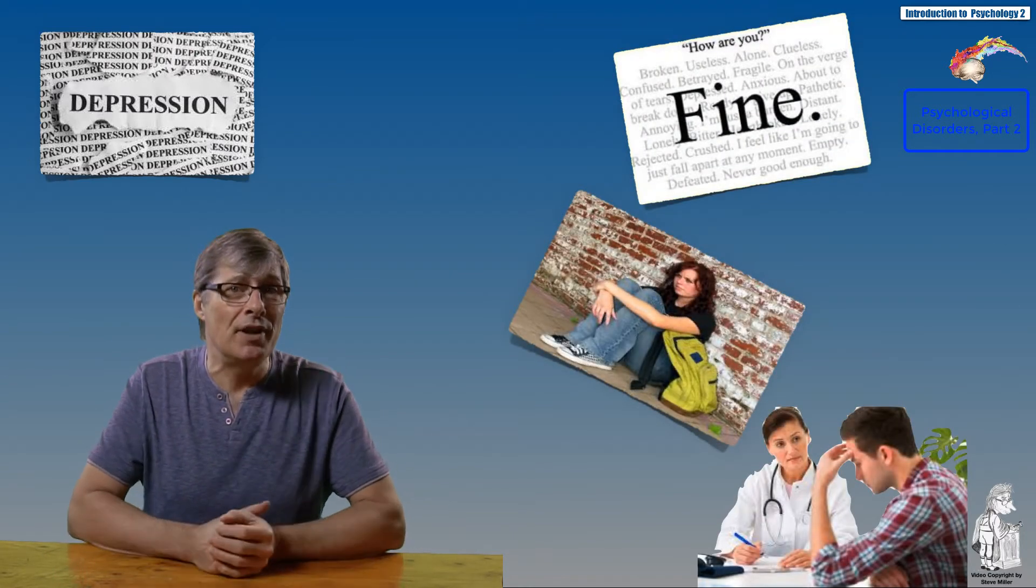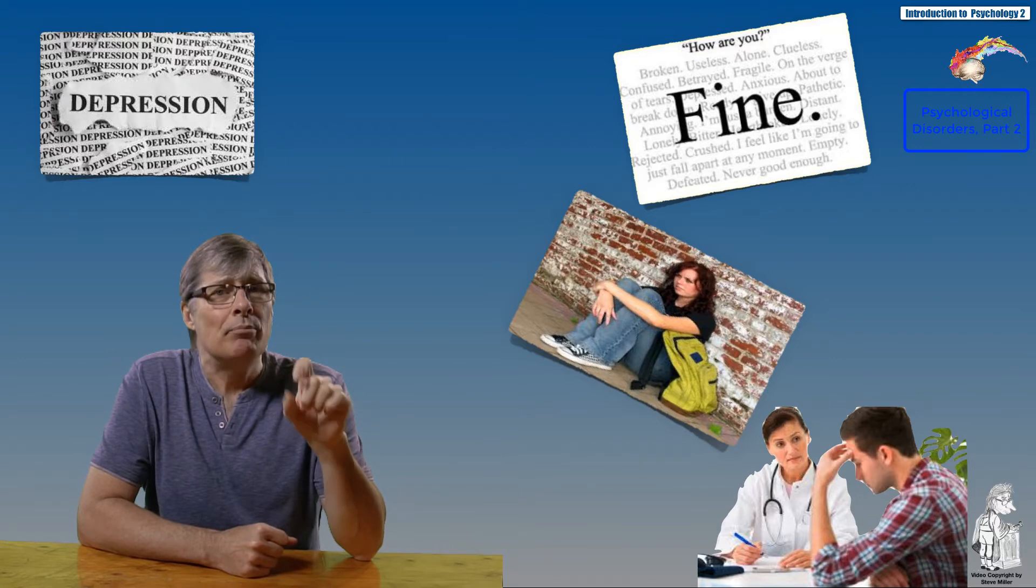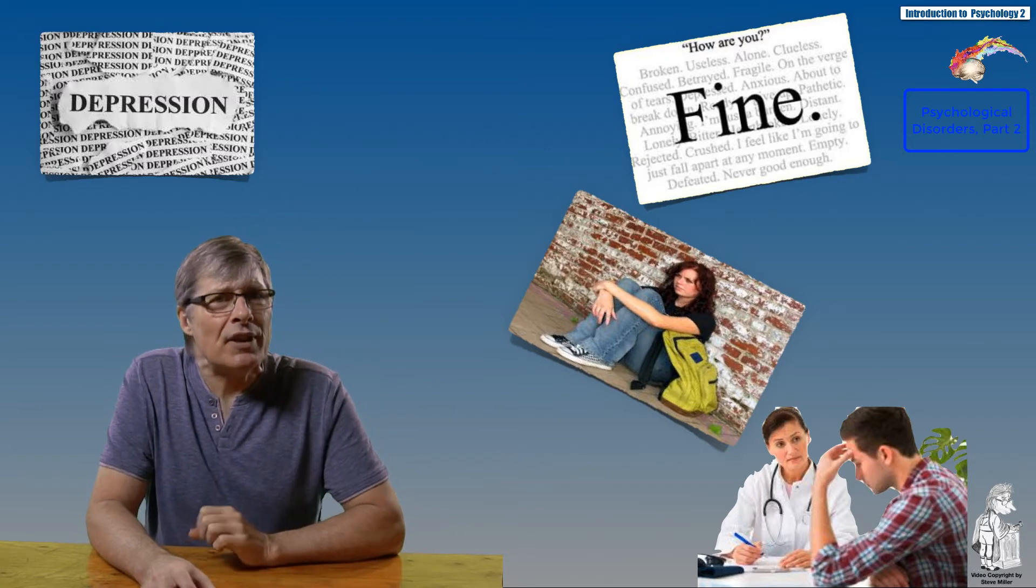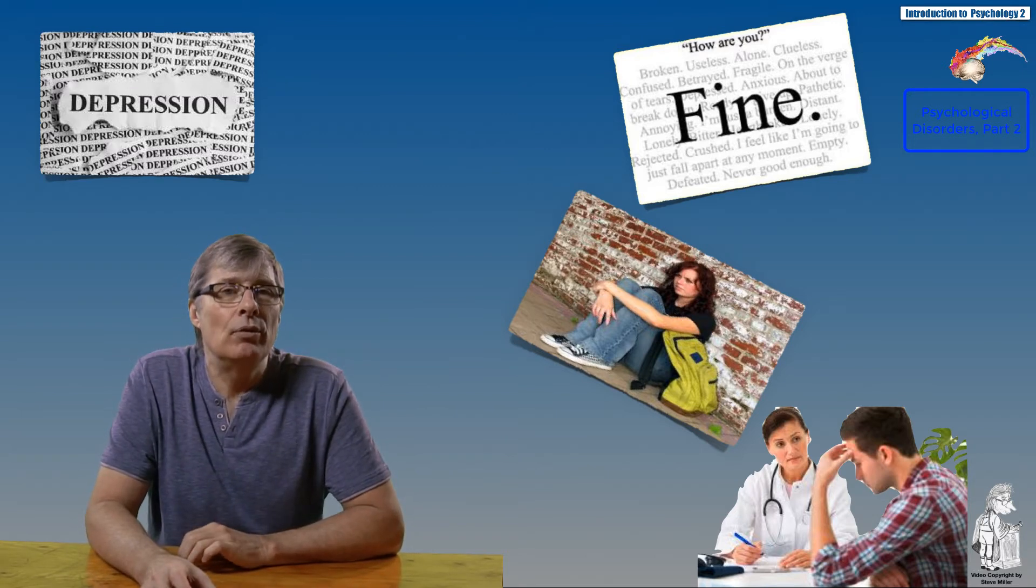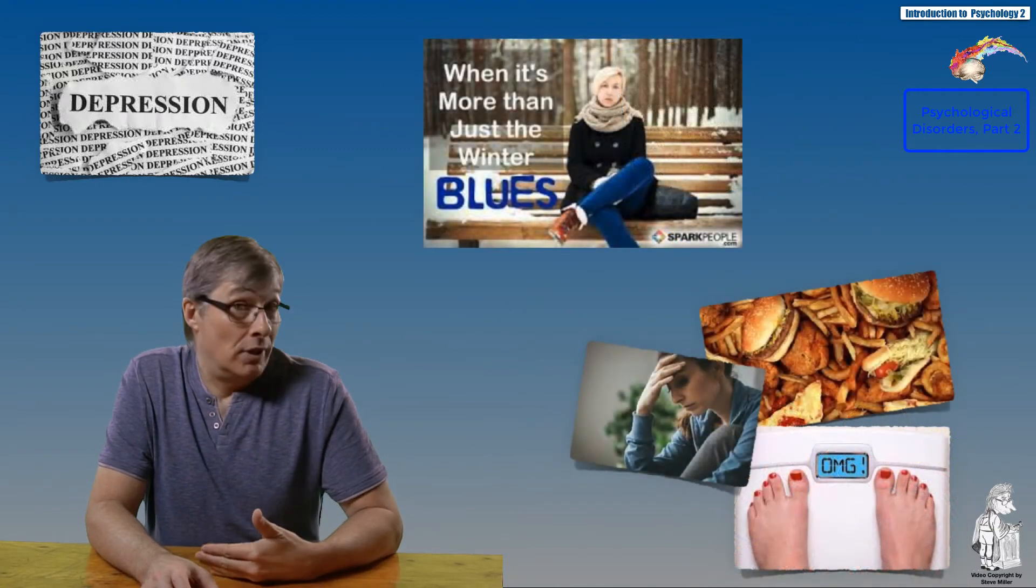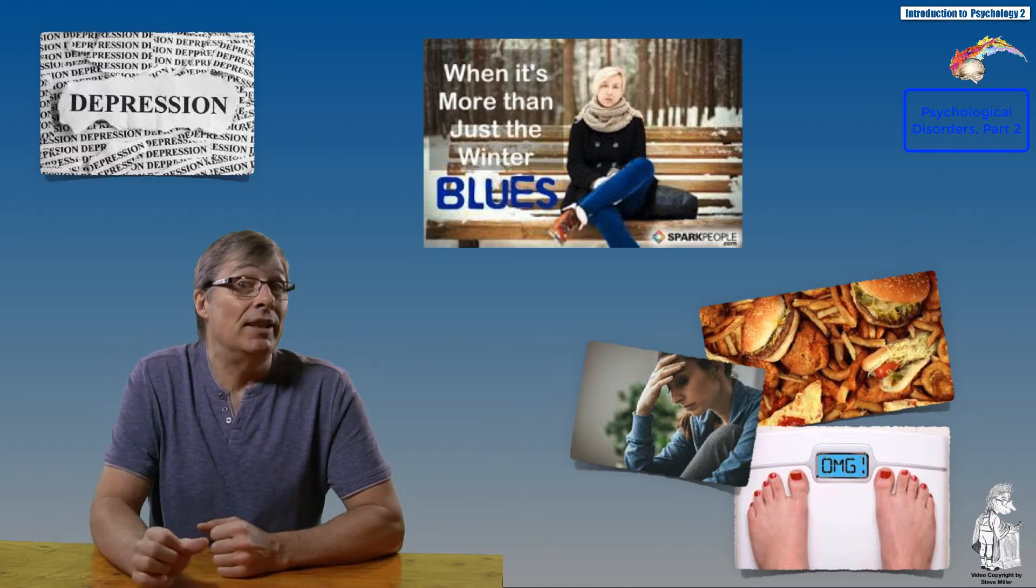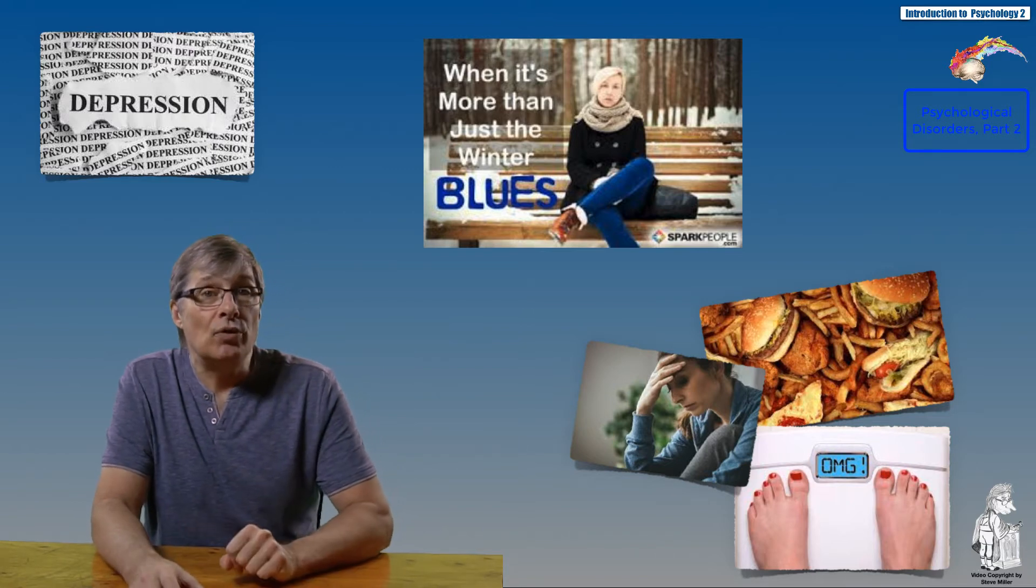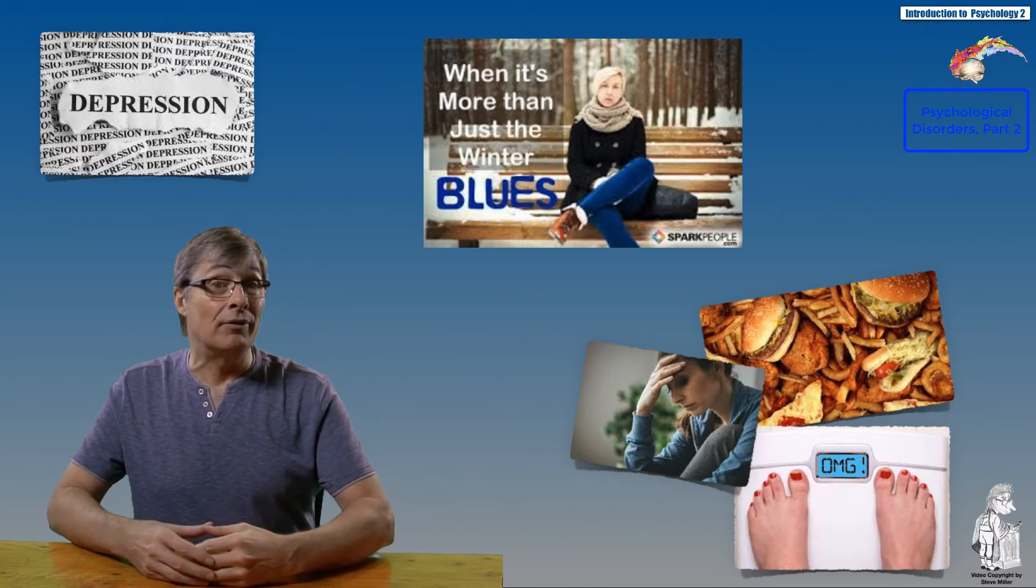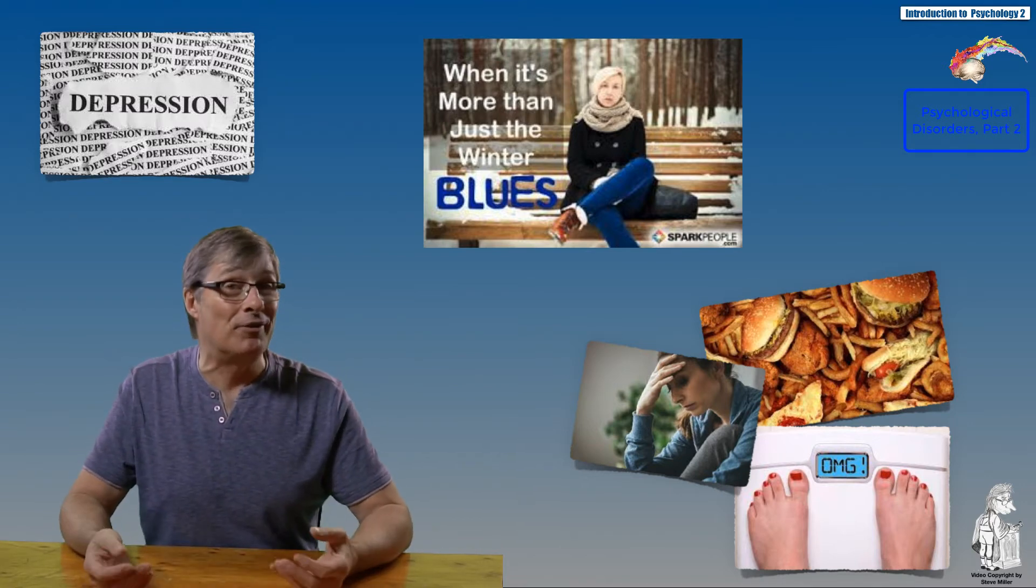Persistent depressive disorder or dysthymia is a milder form of depression. Compared to major depression, persistent depressive disorder lasts longer—about two years or longer—but sufferers have fewer of the symptoms associated with major depression. Another version is seasonal affective disorder (SAD), when depression comes and goes with the seasons. Less sunlight in the winter seems to have an effect on some people more than others. Light appears to be the solution for those people with SAD.